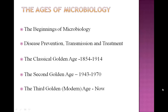Microbiology blossomed during what is called the classical golden age, which lasted for 60 years from 1854 until the advent of World War One in 1914. During this period, scientists were in search of answers in the field of microbiology. They had questions such as: do microbes generate spontaneously? What is the cause of diseases? How can infection and disease be prevented?